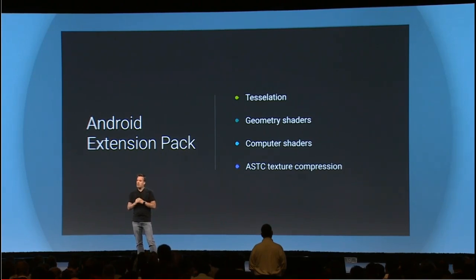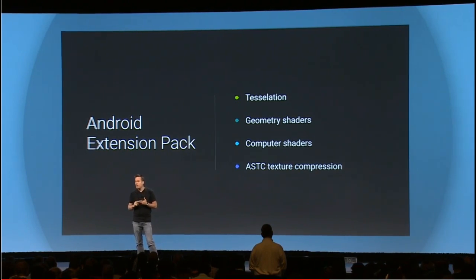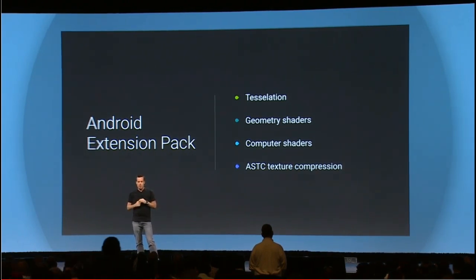It's a set of features that includes things like tessellation, geometry shaders, compute shaders, and advanced ASTC texture compression. So let's take a look at the Android Extension Pack in action.